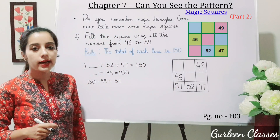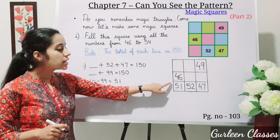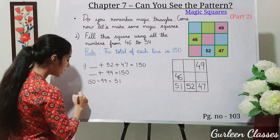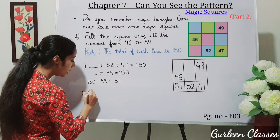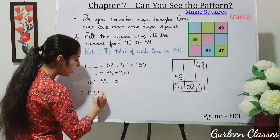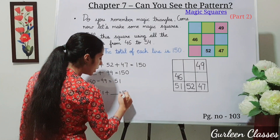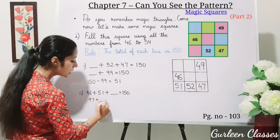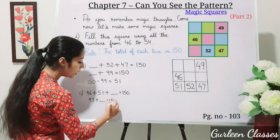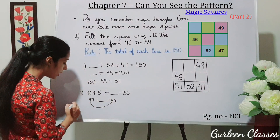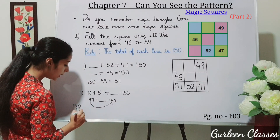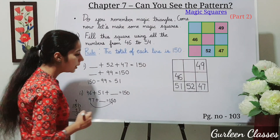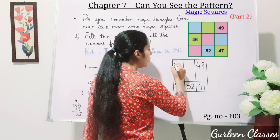Now let us add column-wise. 46 plus 51 plus dash equals 150. That gives us 97 plus dash equals 150, so 150 minus 97 equals 53. We write 53 here.